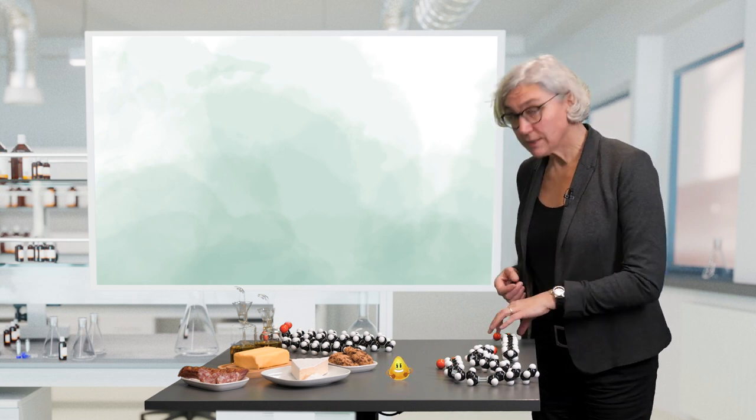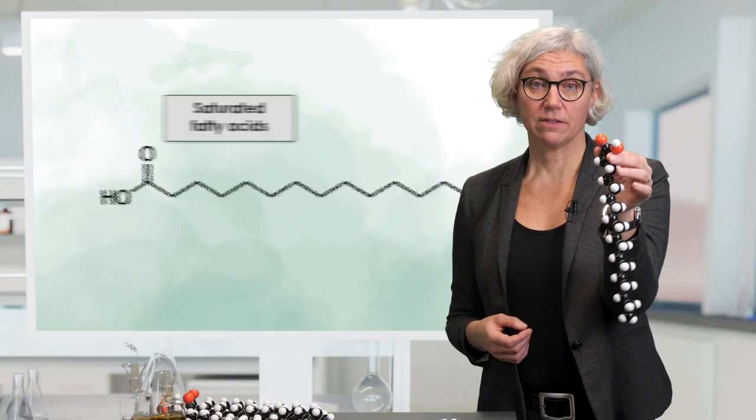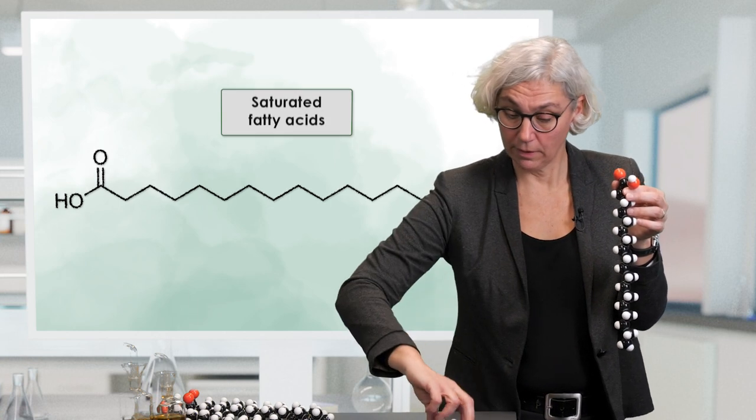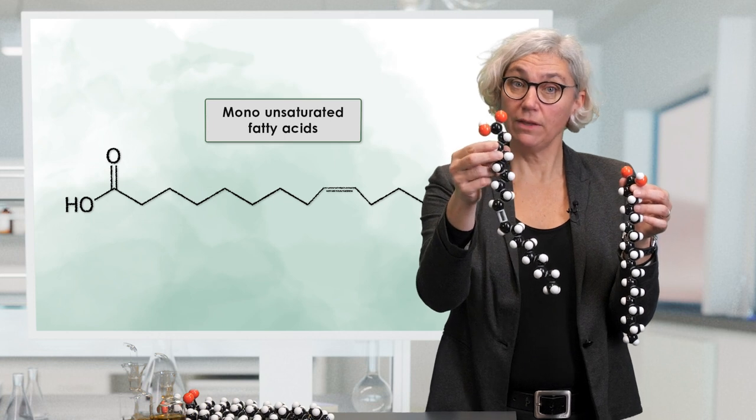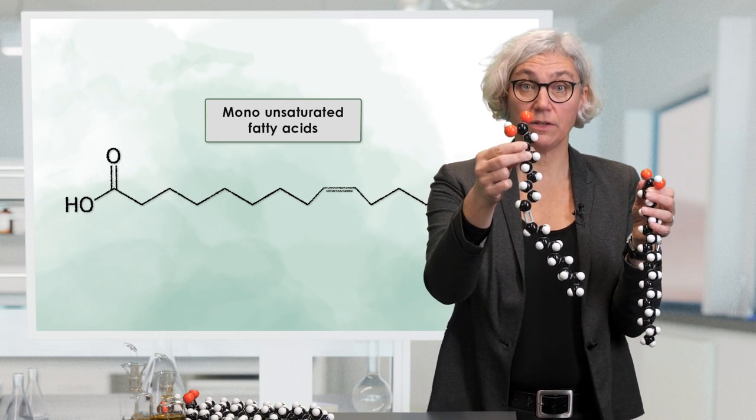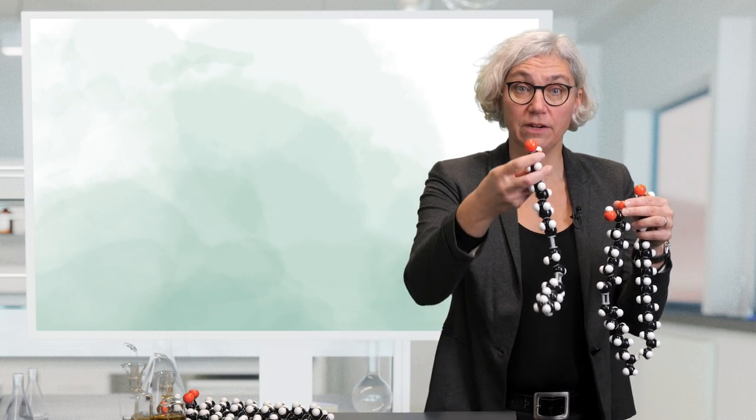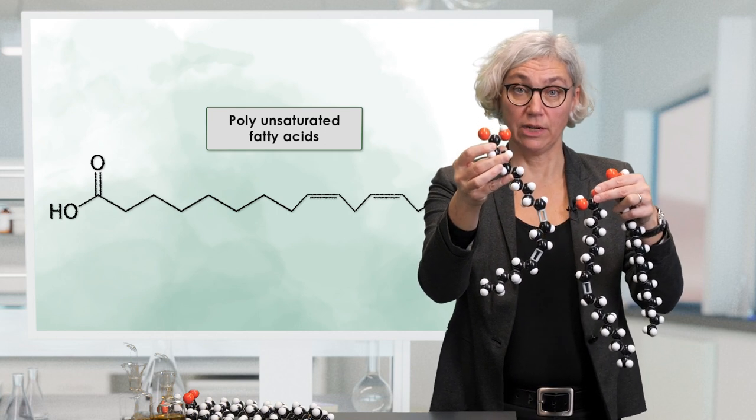Look, I brought some models of the molecules to give you a better picture. This is a saturated fatty acid with a long straight chain. This is a monounsaturated fatty acid with a double bond that gives a knee to the chain. And this here is a polyunsaturated fatty acid with two double bonds and knees in the chain.